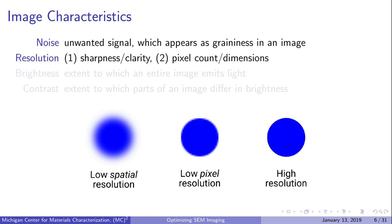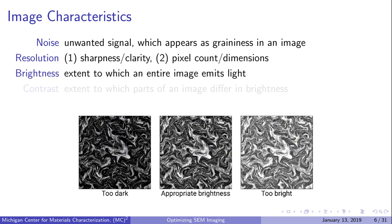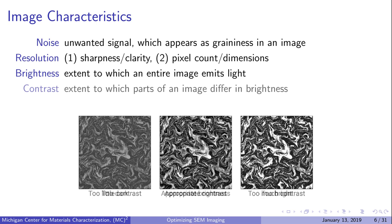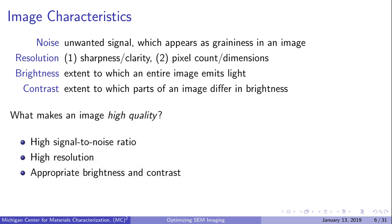The second definition of resolution refers to the pixel count or dimensions of an image in pixels. A common resolution for SEM images on our machines is 1280 by 1280, or 1.6 megapixels. Images with low pixel resolution appear pixelated at normal viewing conditions. Brightness refers to how much an entire image emits light—if too low, the image appears dark; if too high, it appears washed out. Contrast refers to how parts of the image differ from each other in brightness. For the best image quality, we want a high signal-to-noise ratio, high resolution, and appropriate brightness and contrast.